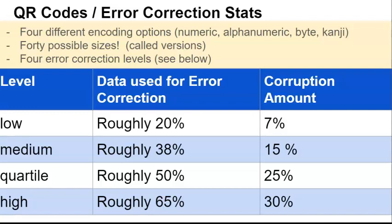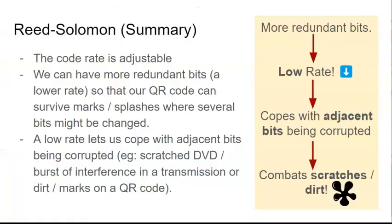You might wish to add this table into your notes. In summary, Reed Solomon is a powerful method for correcting errors. The code rate is adjustable, and the more bits we add, the lower the code rate, but the higher the ability to deal with adjacent bits being corrupted, which means that if we have a low code rate, chances are dirt and scratches on physical media can still be corrected.